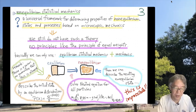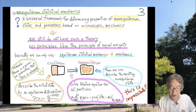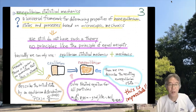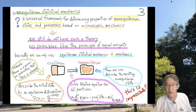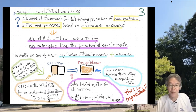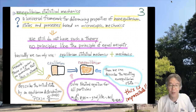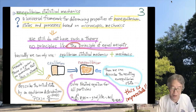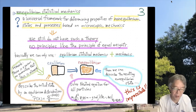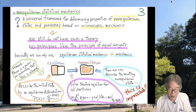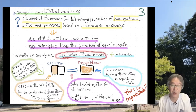What you would expect for non-equilibrium statistical mechanics is a universal framework for determining properties of non-equilibrium states and processes based on microscopic mechanics. It would be great to have such a theory, but we still do not have a general one — perhaps no such general theory exists. One reason is that the principle of equal weight, the powerful single assumption underlying all of equilibrium statistical mechanics, has no counterpart in the non-equilibrium world.